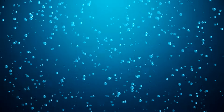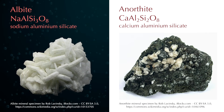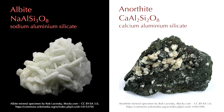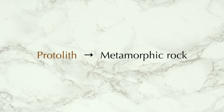Altering the chemistry of minerals also changes the rocks they make up. Every mineral has a unique chemical formula. For instance, the formula for the mineral albite is sodium aluminium silicate. It's possible to remove the sodium and add some calcium, which produces a different mineral called anorthite. Although mineral grains can undergo chemical changes like this, it's important to note that the composition of the whole rock is constant. Our original rock, known as the protolith, contains the same chemical elements as the final metamorphic rock — they have just been rearranged a bit.